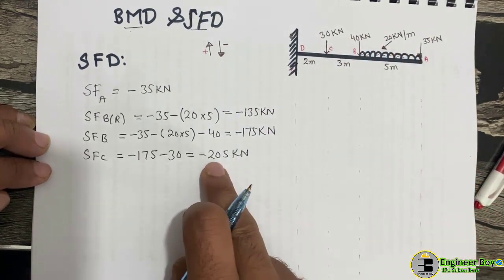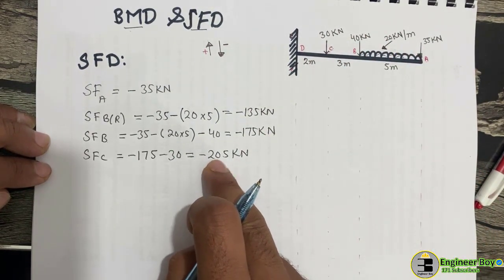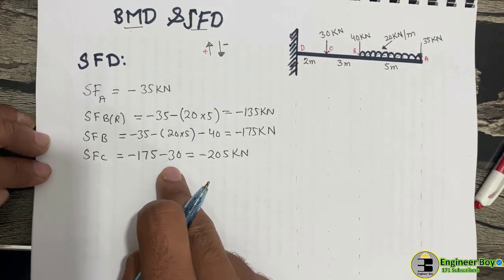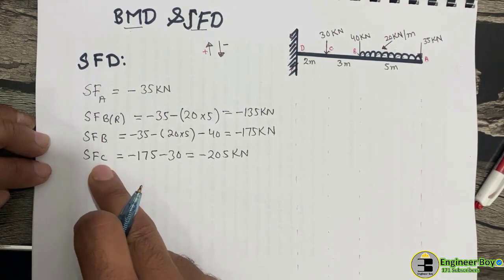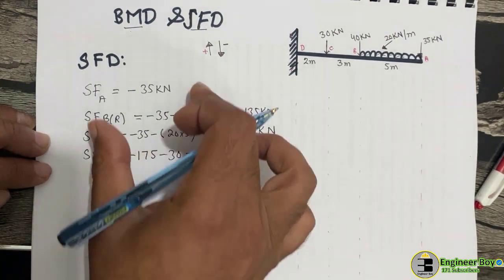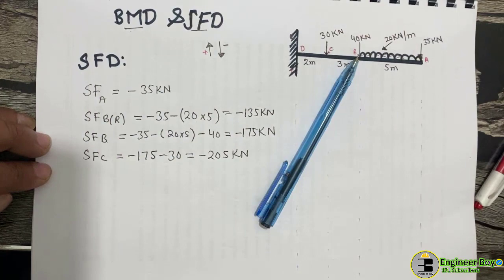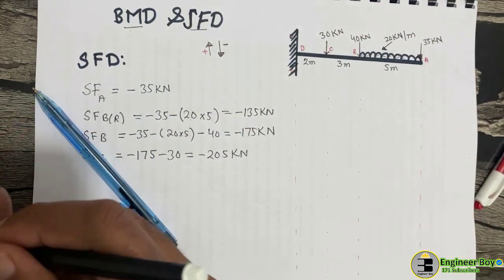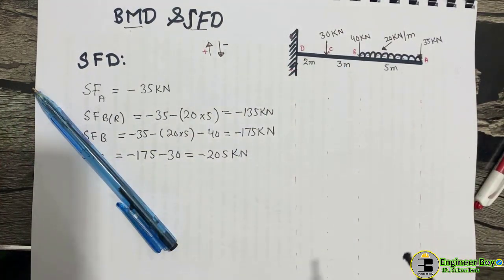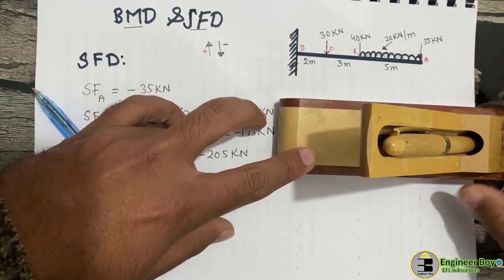Point D is the support, so it takes all the load. The shear force at D is the same as the shear force at point C, which is minus 205 kilonewtons. This data is enough to draw the shear force diagram.